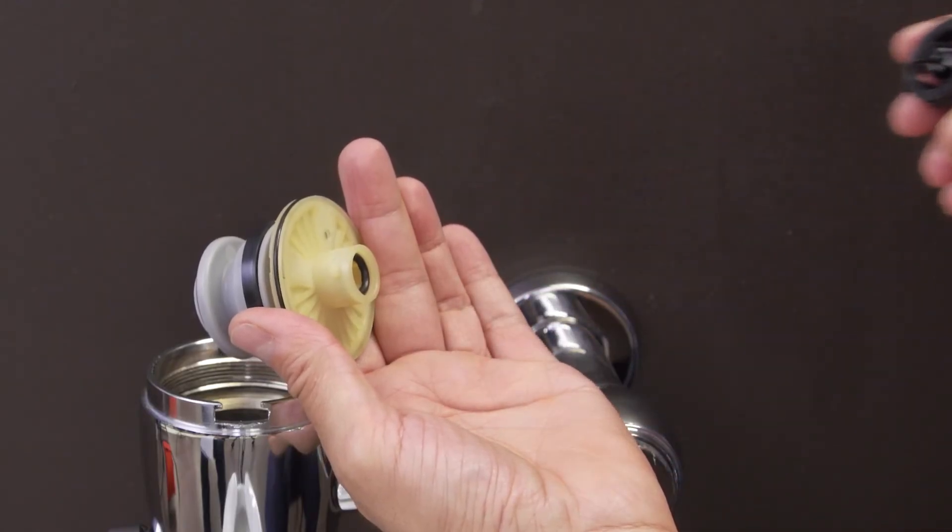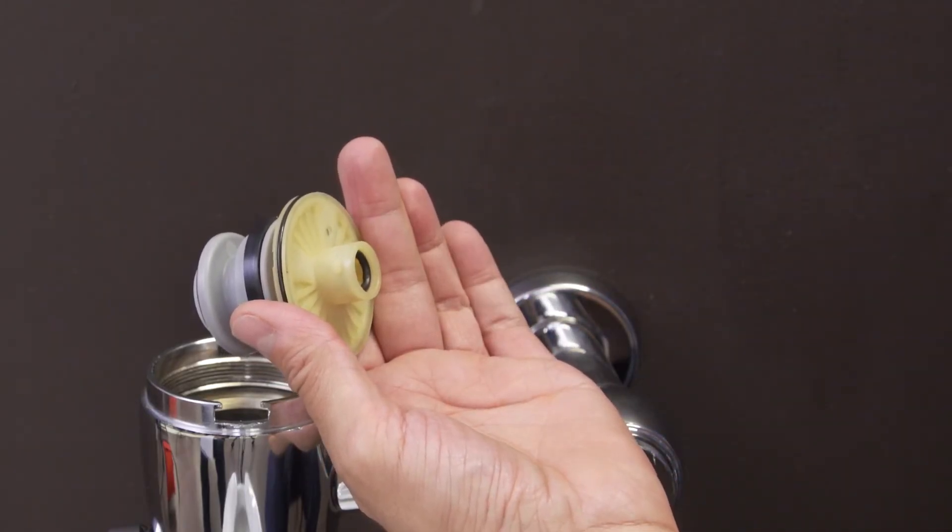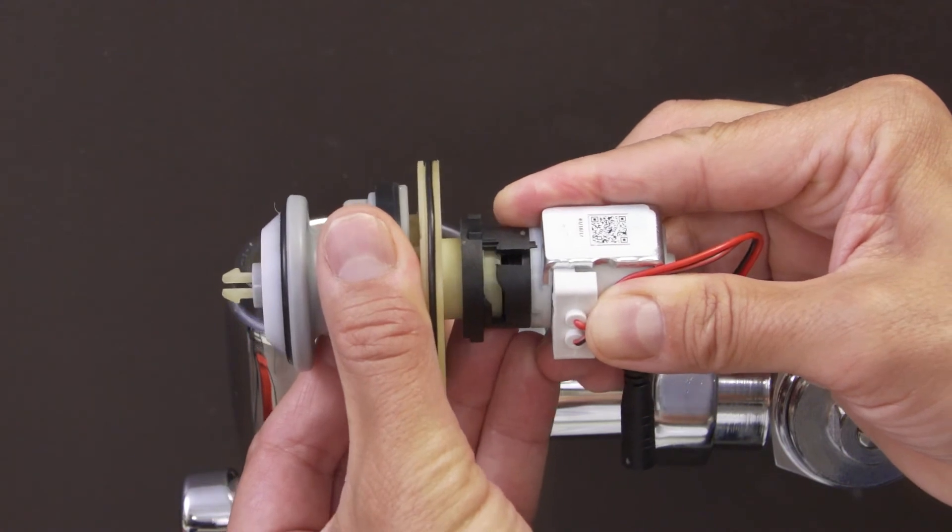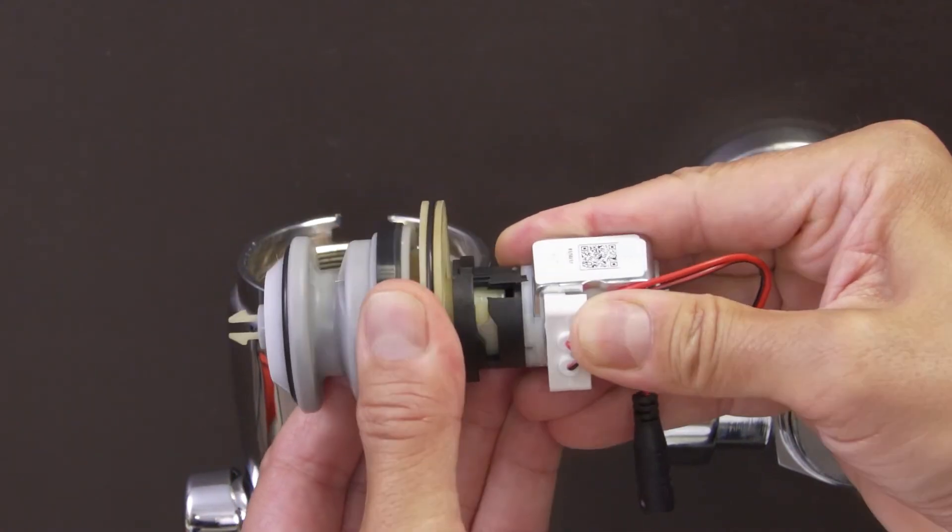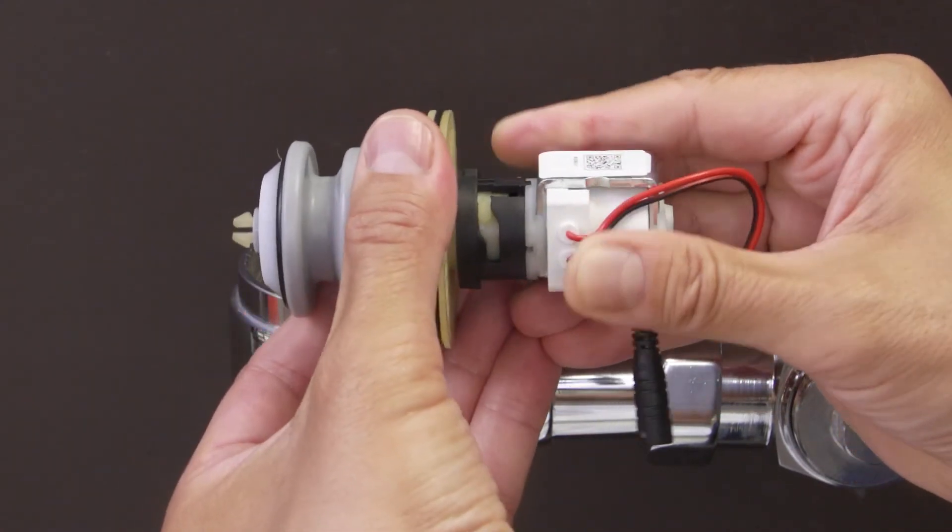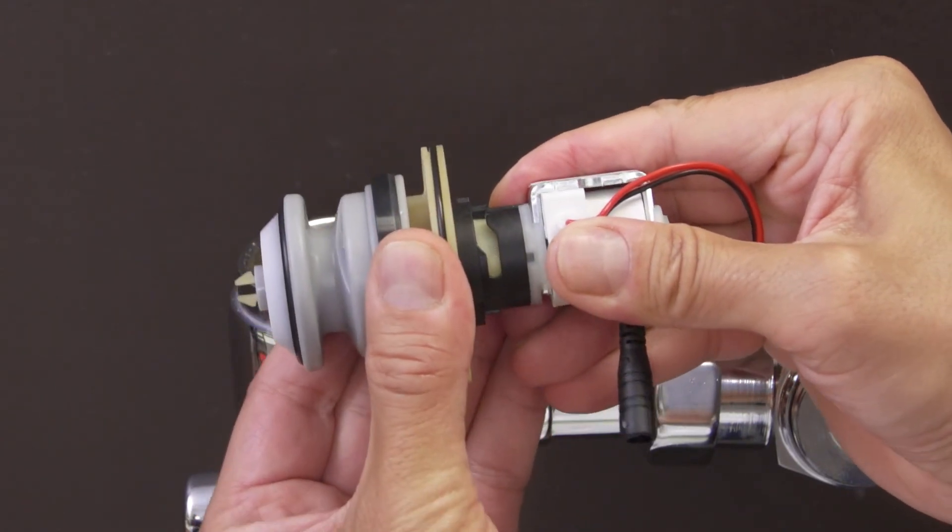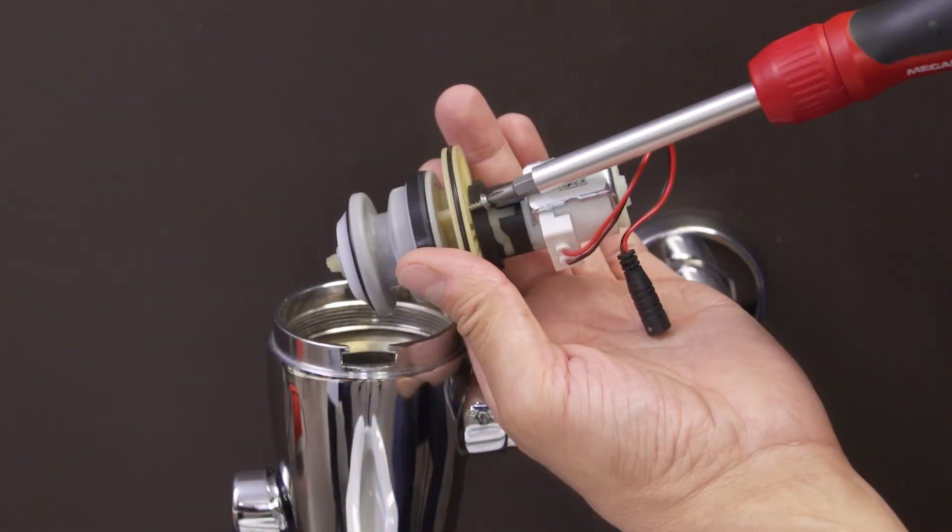Next, discard the old solenoid. Push the new solenoid into the piston. Rotate it a quarter turn clockwise to lock it into place. Now tighten the locking screw.